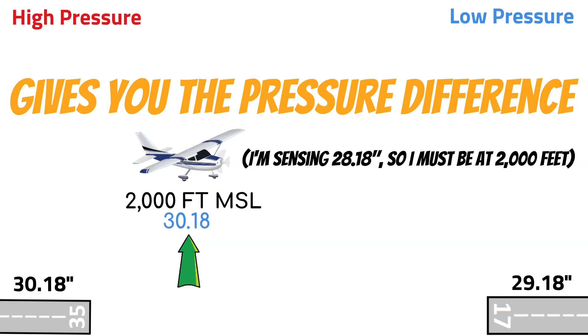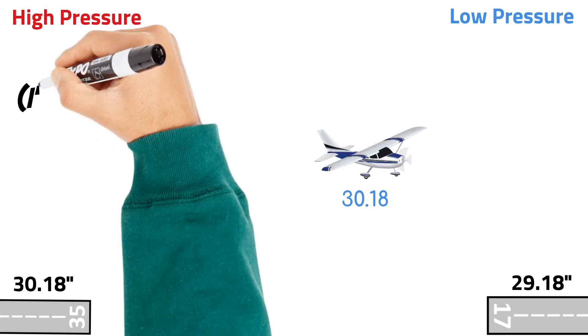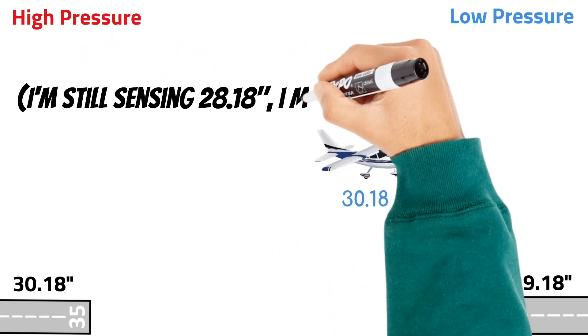Okay, so let's say we fly closer to the field and we still have 30.18 set. So now what the altimeter is doing is saying, I'm still sensing 28.18, so I must still be at 2000 feet because he has the field pressure set at 30.18 and that's a difference of 2 inches of mercury.